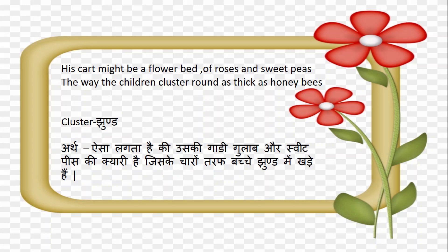His cart might be a flower bed of roses and sweet peas, the way the children cluster around as they kill — like honey bees. Aise lagta hai ki uski gaadi, gulab aur sweet peas ke phoolon ki kyari hai, jiske charo or bachay madhu makkhiyon ki tarah ghoom rahe hain.